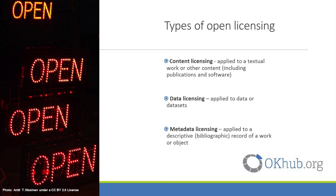For simplicity, we will distinguish three types of open licensing. Content licensing refers to a licence applied to a textual work or other content, including publications and software. Data licensing refers to a licence applied to data or data sets. And metadata licensing refers to a licence applied to a descriptive or bibliographic record of a work or object.